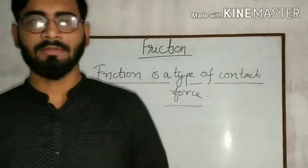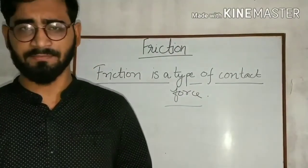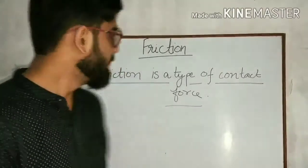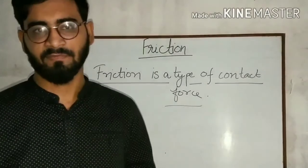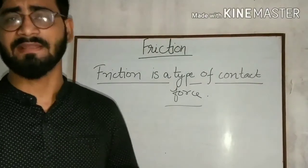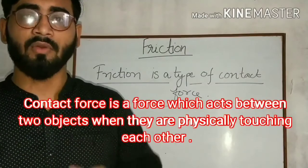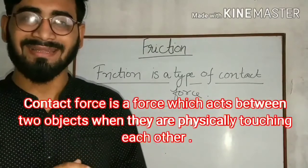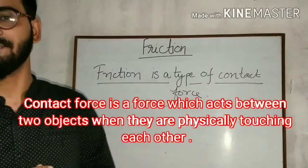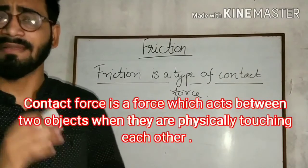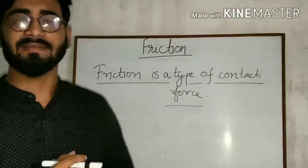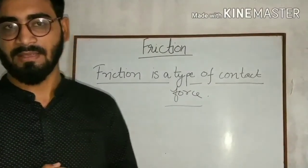Now, as we have already discussed, friction is a force that opposes the motion. But always remember that friction is a type of contact force. We have studied about contact force in the previous chapter. Contact force is the force that acts between two objects when these two objects are physically in touch with each other.